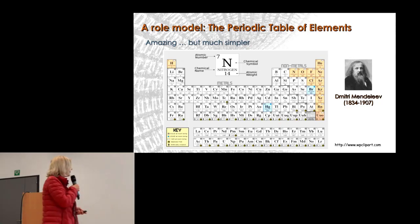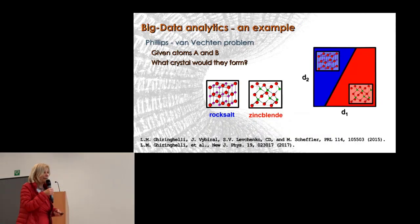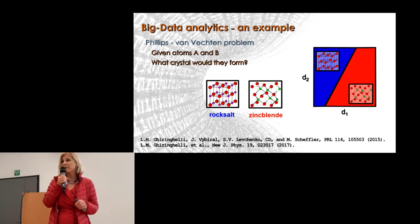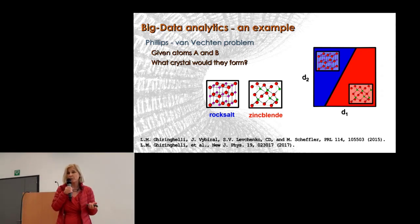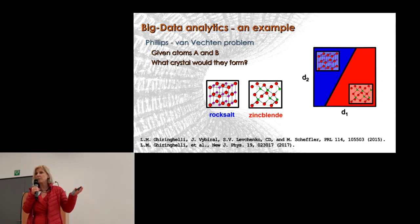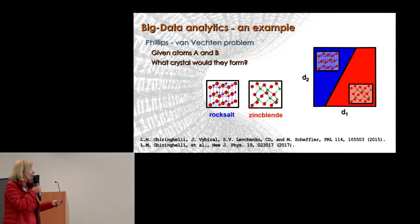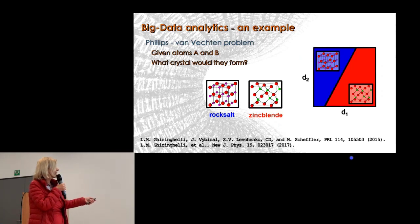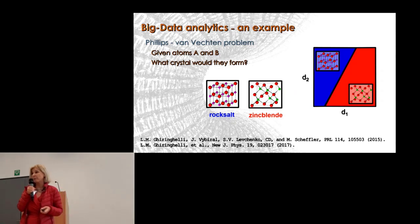Let me give you one example, the simplest example we came up with a few years ago. It's the first paper we published in this respect, about a very simple and well-known problem: the Philips-Van Vechten problem. Given I have two atoms A and B, what kind of crystal structure would they form? Would this be zincblende or rocksalt? In this case it would be a two-dimensional map, somehow telling us as a function of D1 or D2 where in this map I could find one or the other crystal structure.